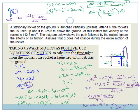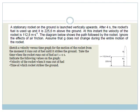Now let's do the final part of the question. We are asked to sketch a velocity versus time graph for the motion of the rocket from the moment it runs out of fuel until it strikes the ground. It says take the time when the rocket runs out of fuel as t = 0. We are drawing a velocity versus time graph for the free fall phase, and we must indicate the velocity when the rocket runs out of fuel, and the time at which the rocket strikes the ground.